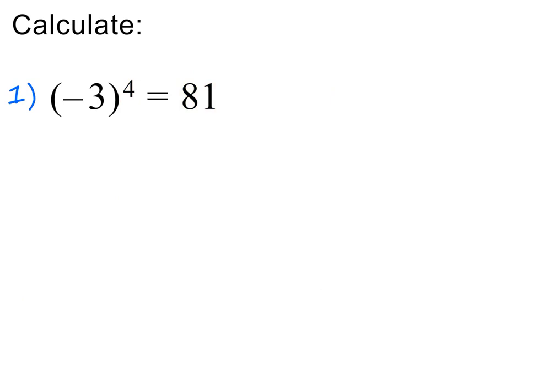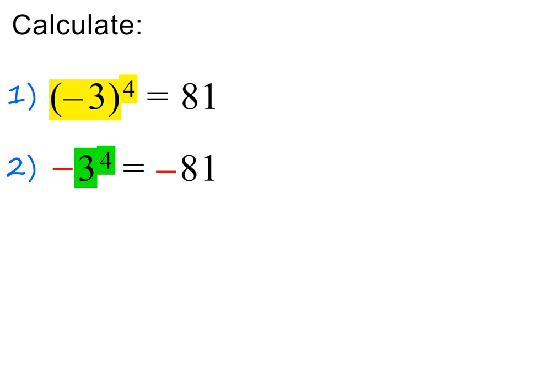We have just calculated that minus 3 all to the power of 4 is equal to 81. The brackets tell us that both the minus and 3 must be raised to the exponent 4. Let's now calculate the same power but without the brackets. Because there are no brackets, only 3 is the base raised to the power of 4. This means that the minus will stay in front, and 3 to the power of 4 is equal to 81, so the final answer is minus 81.